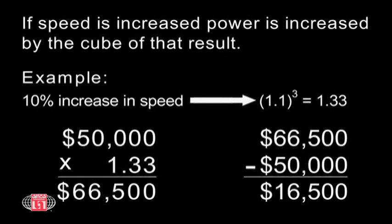Or consider a second example of a 100 brake horsepower fan that costs $50,000 per year to operate. A 10% increase in speed to compensate for system effect will result in an over $16,000 operating cost increase per year. And that's just for one fan.